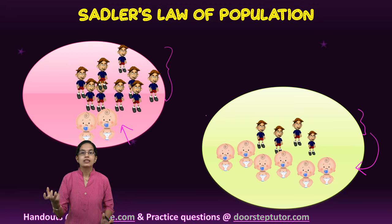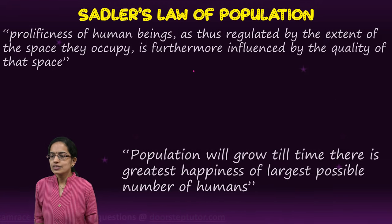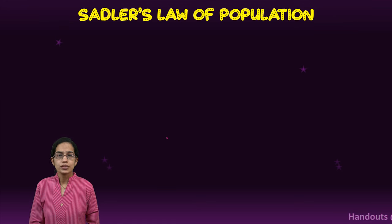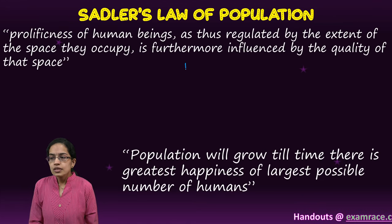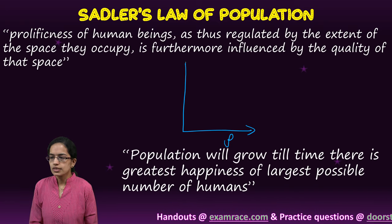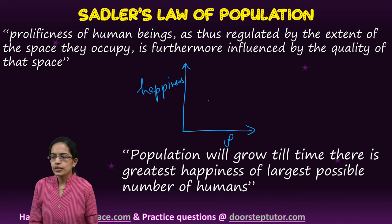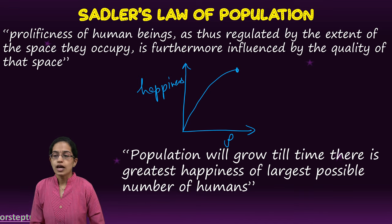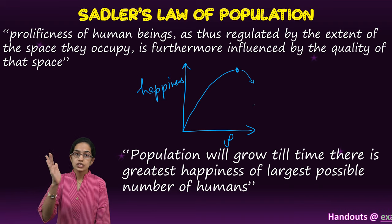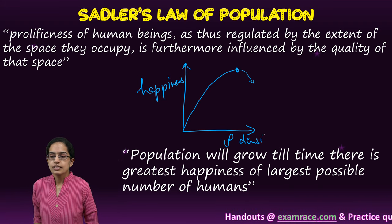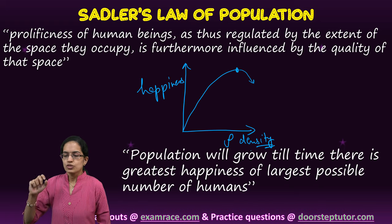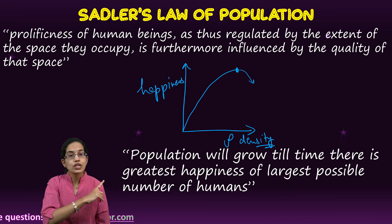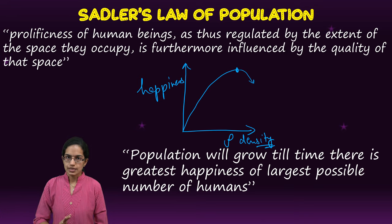His theory tried to bring about the concept of population growth alongside the concept of happiness. He plotted a simple curve between happiness and density, explaining that happiness would increase as density increases, but beyond a given point happiness would start to decline when density exceeds a permissible limit. According to him, population will keep growing till the point of greatest happiness of the largest population.